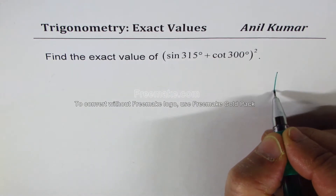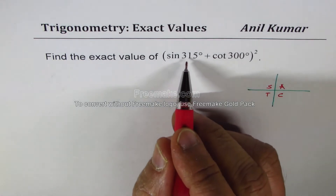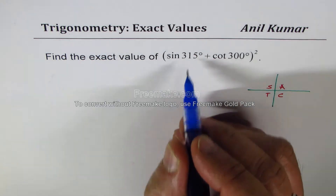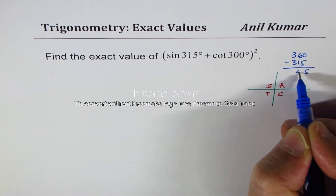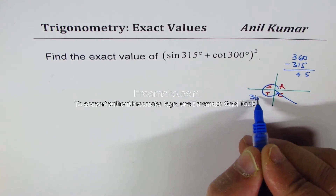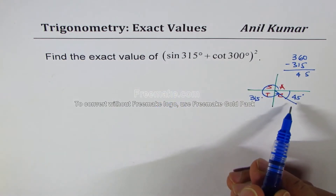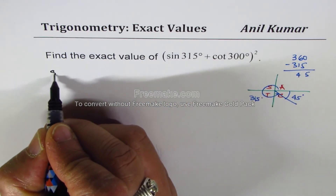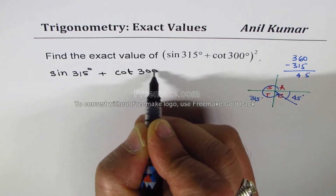Sine 315 — what does that mean? Looking at the coordinate plane: 315 is in quadrant 4. 360 minus 315 gives us 45, so the acute angle is 45 degrees. Since we are in quadrant 4, sine 315 is going to be negative. So sine 315 can be written as minus sine 45 degrees.